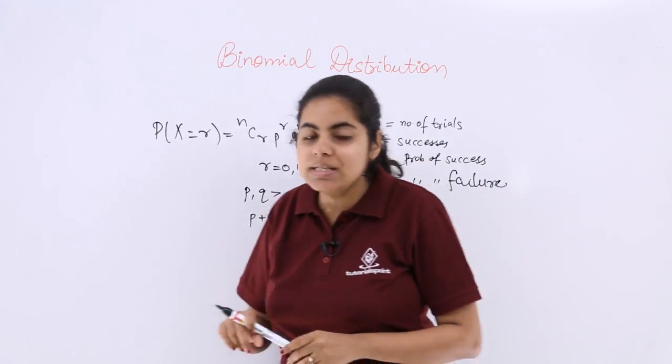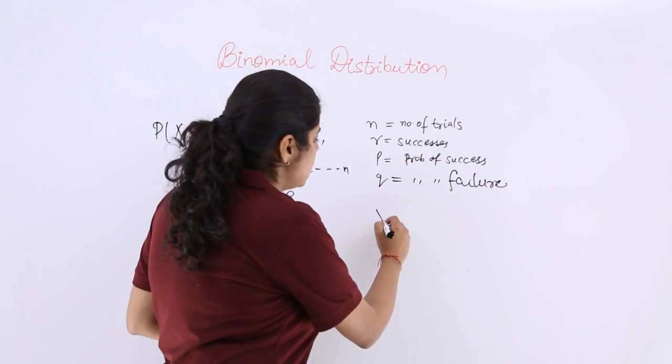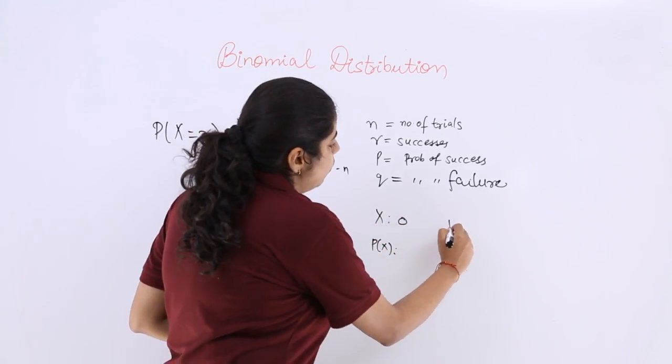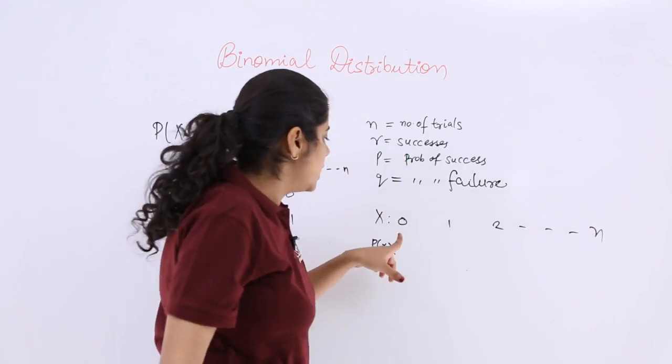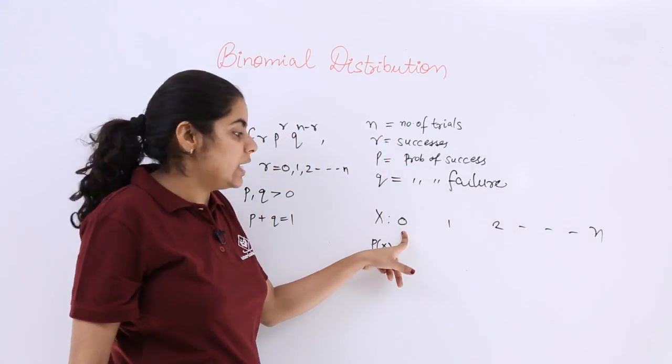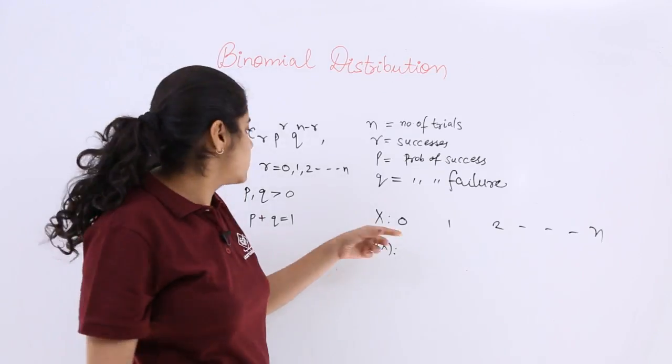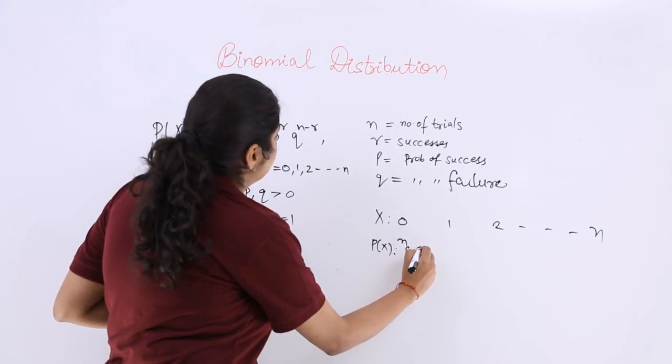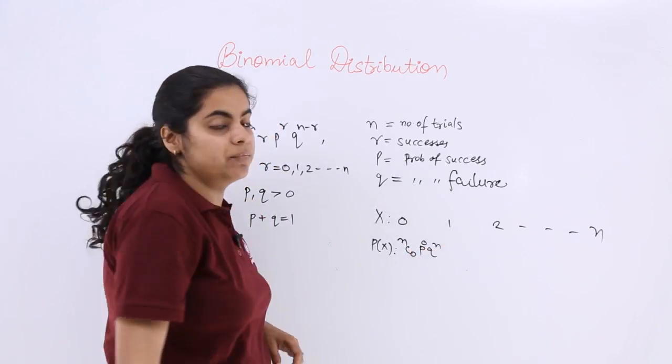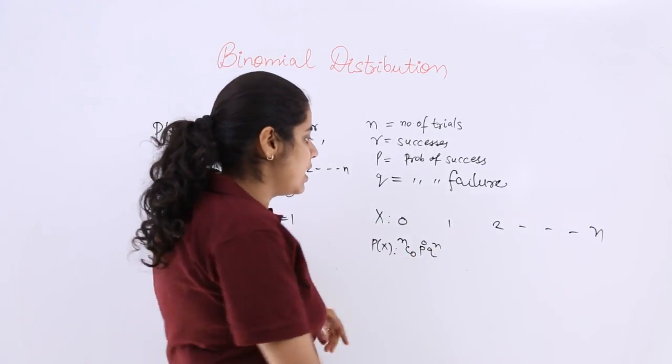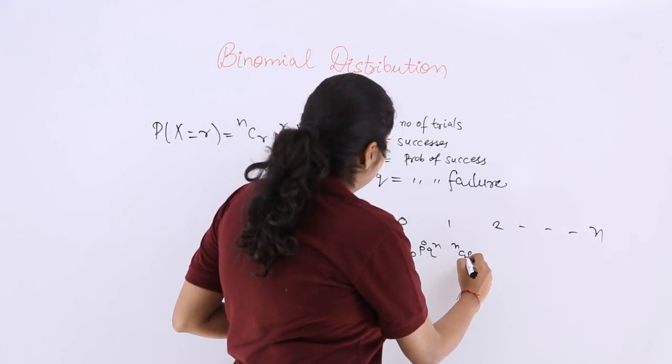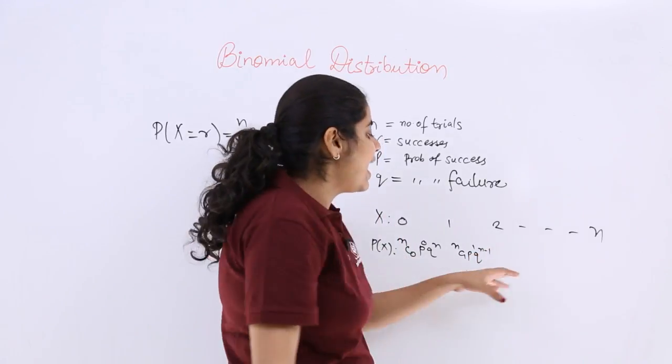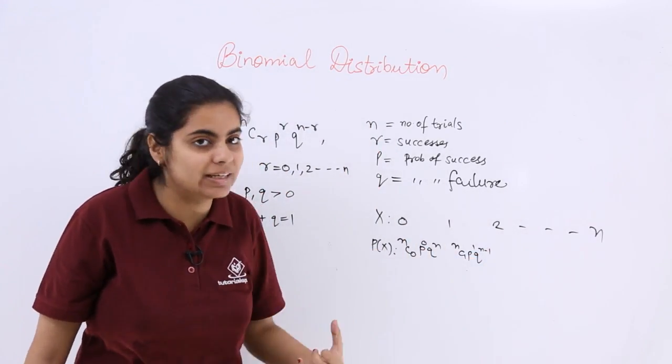One more thing - what is the probability distribution like? If we have 0, 1, 2, and so on up to n: for 0 successes, r=0, so it becomes nC0 p^0 q^n. Similarly, when r=1, this becomes nC1 p^1 q^(n-1), and so on. Hence it can be expanded like that.